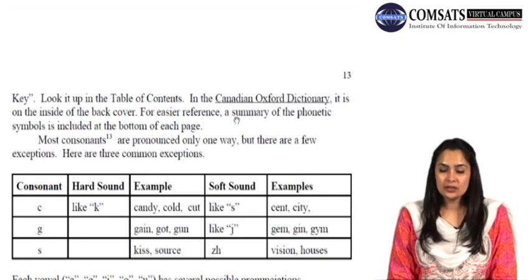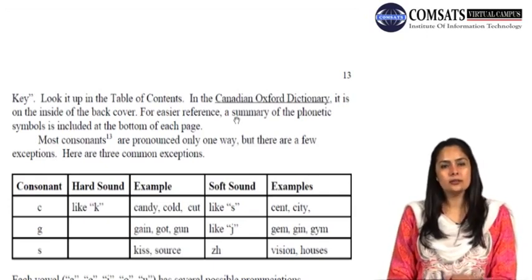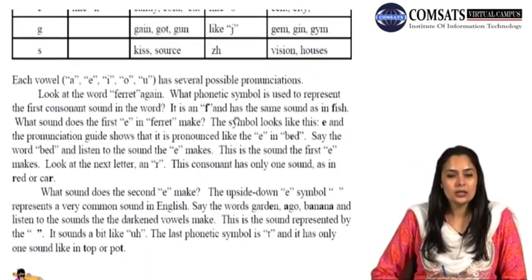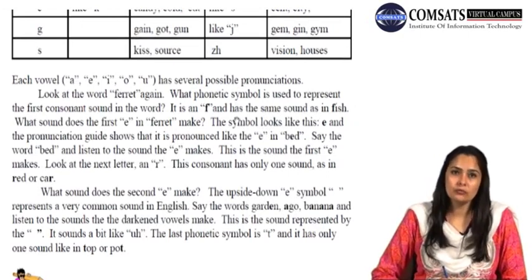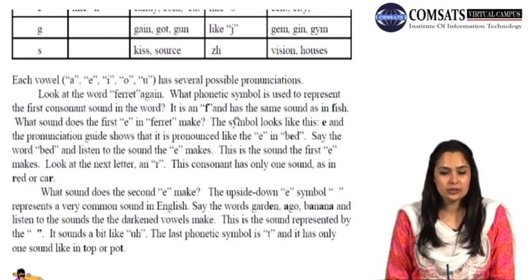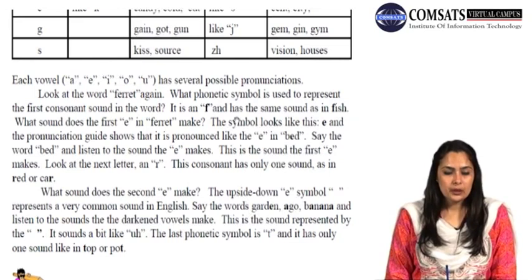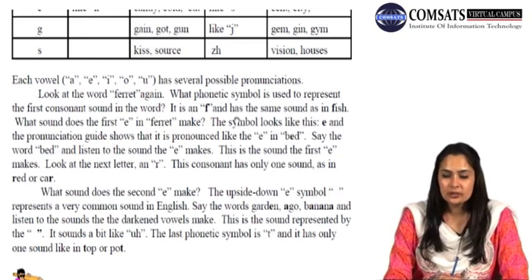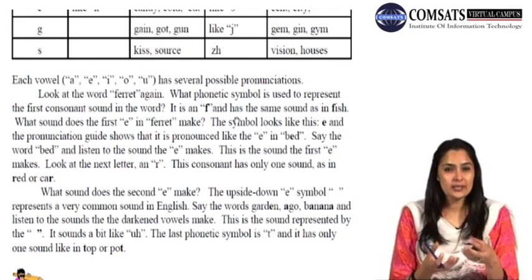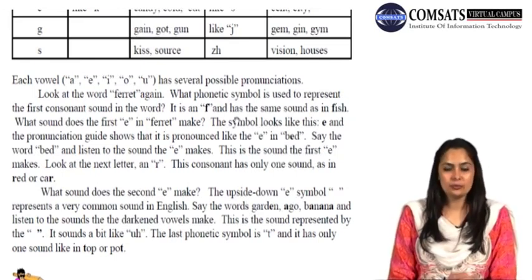We also have a list of vowel sounds underneath the table. These also have several different pronunciations, which you can understand by looking at examples in the next paragraph. The symbol that looks like 'E' in the pronunciation guide shows it is pronounced like the E in 'bed' — say the word 'bed' and listen to the sound E makes. So when you correspond one sound to a word in which it is placed, you can try to guess the sound of that letter and in turn improve your pronunciation. Exercise 5 asks you to practice using phonetic symbols by finding these words in your dictionary and checking the correct pronunciation by saying them aloud.